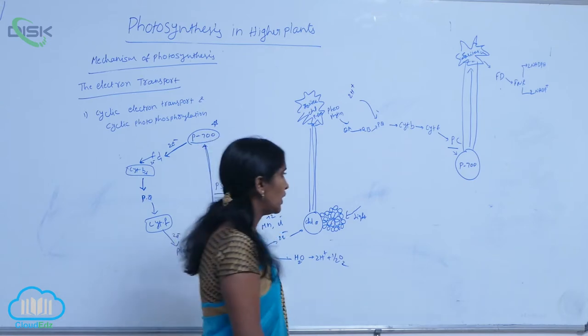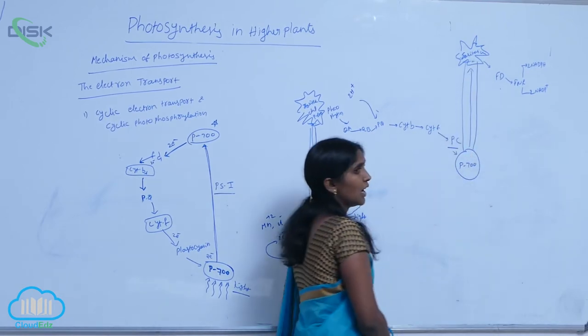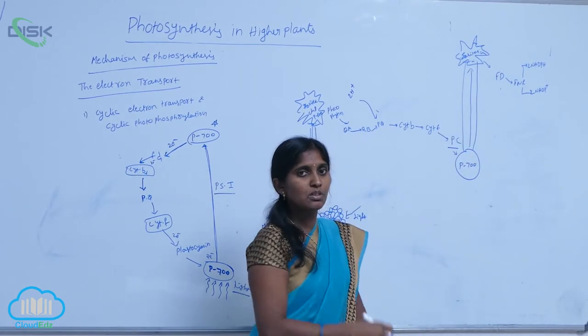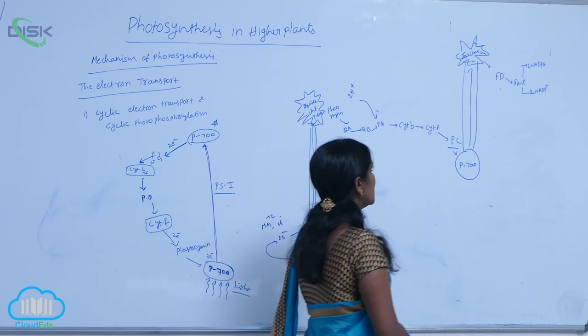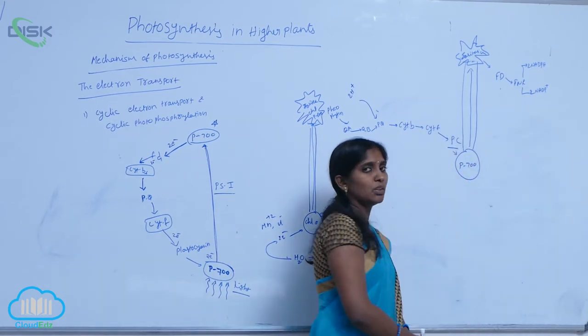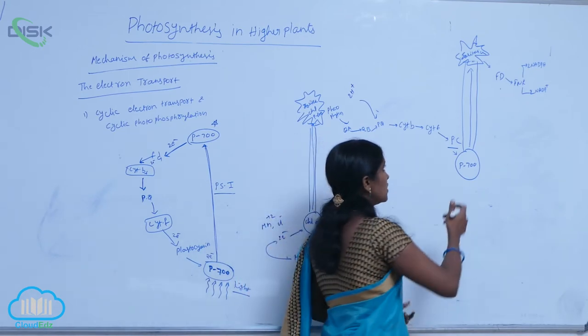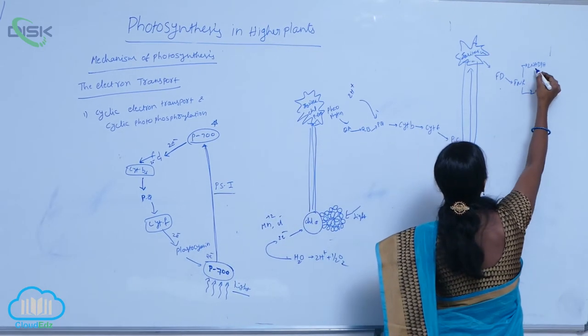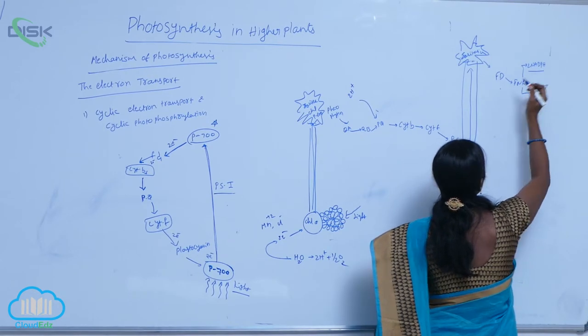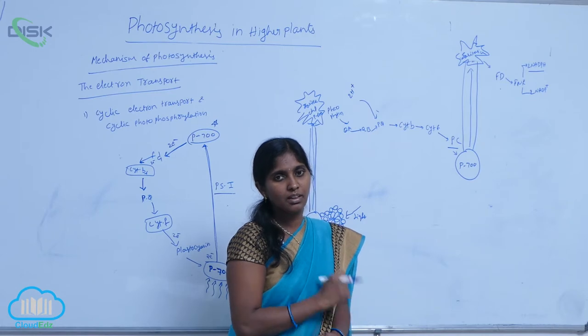By taking two electrons, P700 also gets excited and goes for downstream electron transportation. There one enzyme works. What is that? NADP oxidoreductase. In the presence of that enzyme, NADPH is released. Two NADPH2 molecules are released.